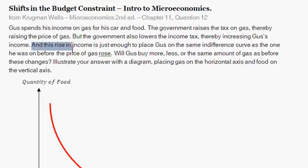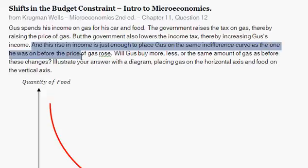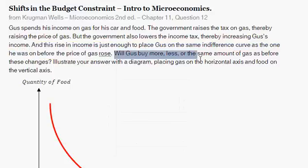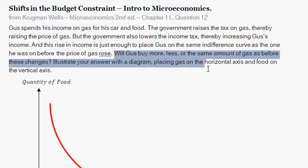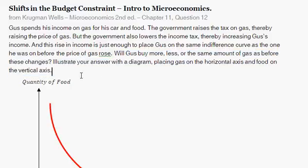And this rise in income is just enough to place Gus on the same indifference curve as the one he was on before the price of gas rose. Will Gus buy more, less, or the same amount of gas as before these changes? Illustrate your answer with a diagram, placing gas on the horizontal axis and food on the vertical axis.